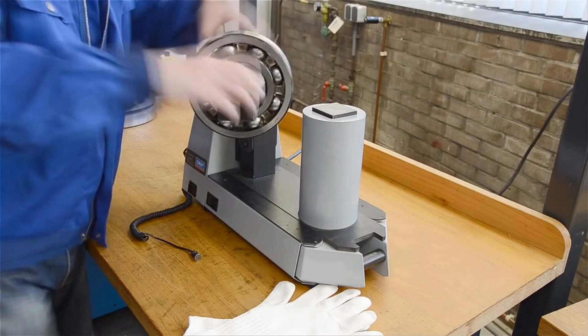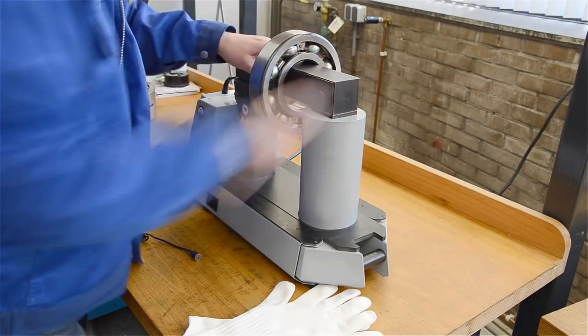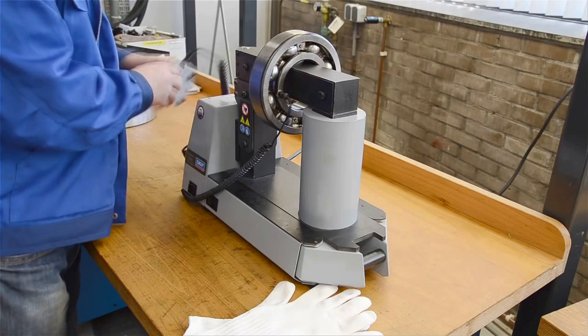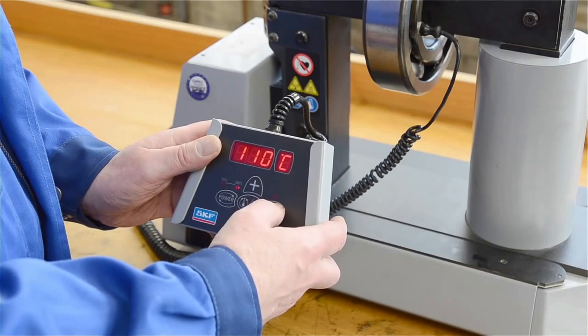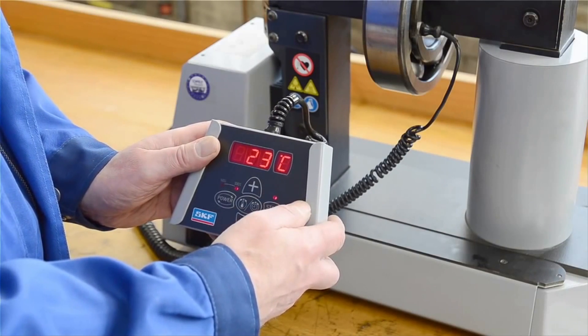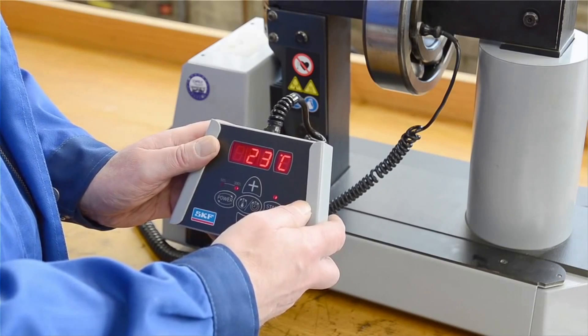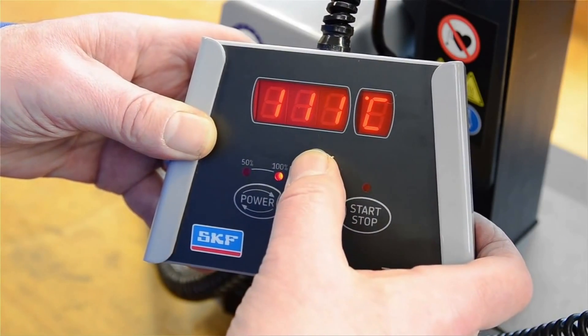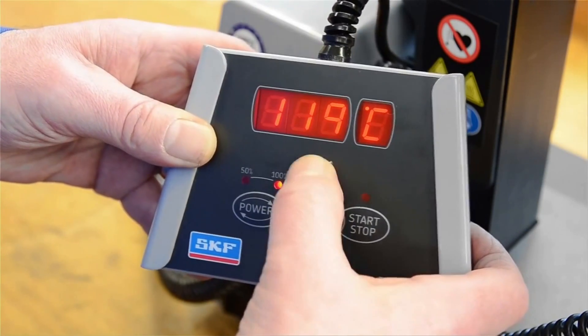Place the bearing on the heater and then place the temperature probe on the bearing inner ring. Press the start button on the remote control and the bearing starts heating. The preset temperature is 110 degrees Celsius, but you can also choose the temperature you want.